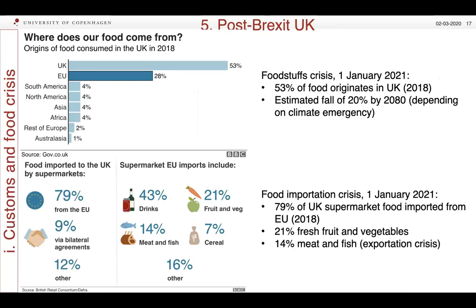What does the future hold for post-Brexit Britain? This is very difficult to say. One issue is that Britain has a food crisis on its hands. Britain has not fed itself from produce produced in Britain since the Napoleonic Wars of the early 19th century. Even during the Second World War it relied on assistance from the Dominions, the Empire, and the United States in food convoys to keep people alive. About 50 to 53% of food originates in the United Kingdom, as shown in the top left-hand diagram, but this is estimated to fall by about 20% over the next 50 to 60 years depending on the climate emergency.